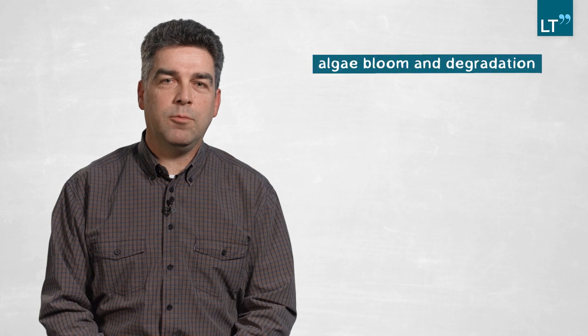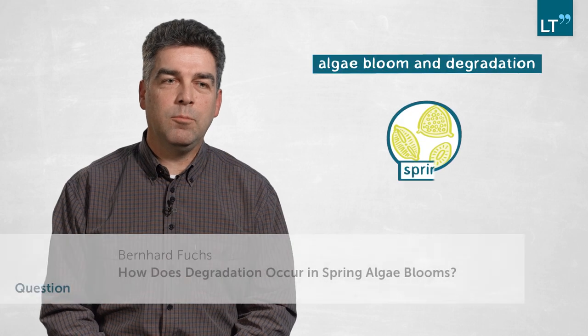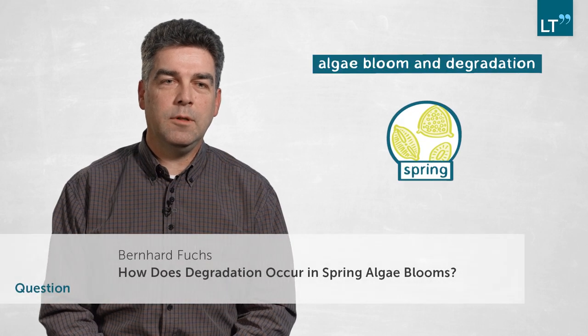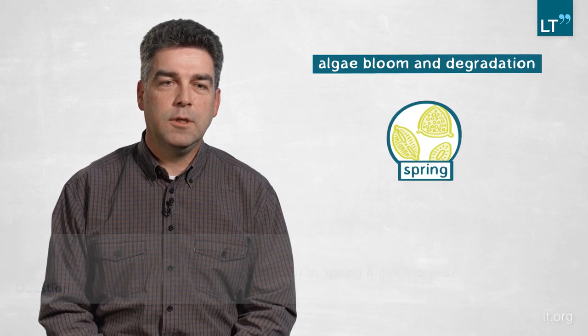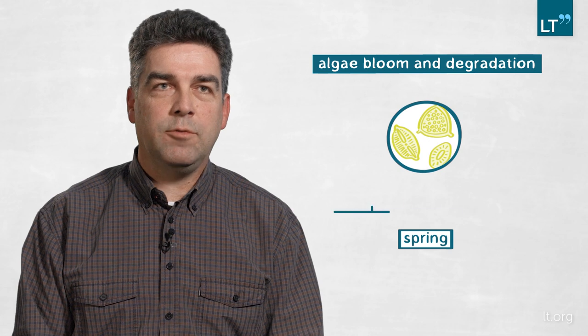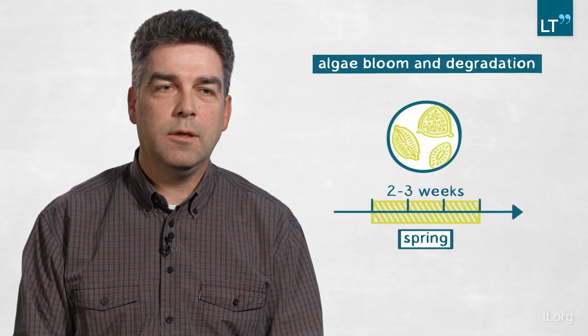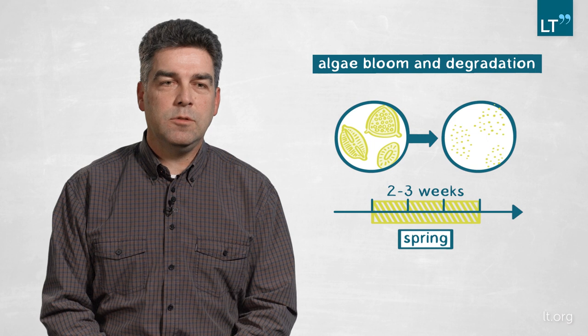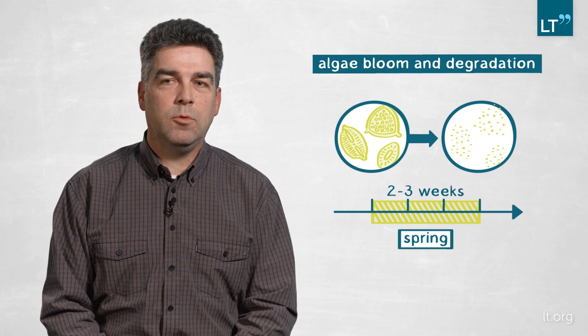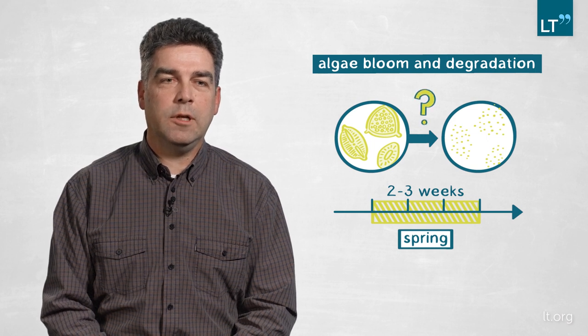Every year in spring you have massive algal blooms in the temperate and polar oceans, which vanish after two to three weeks of blooming. The mechanism of this degradation was completely unknown so far, and we asked ourselves who is degrading it. We focused on the bacterial part of it, and the second question was how are they doing it.